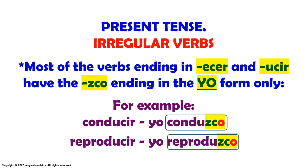Present tense, irregular verbs. Most of the verbs ending in UCIR and ECIR have the ZCO ending in the yo form only. For example: conducir — yo conduzco; reproducir — yo reproduzco.